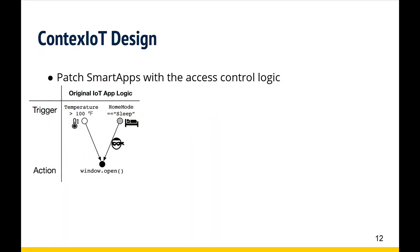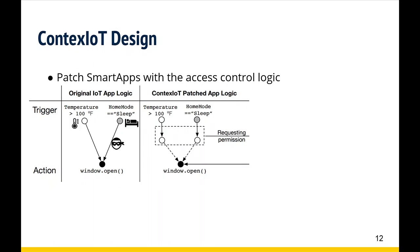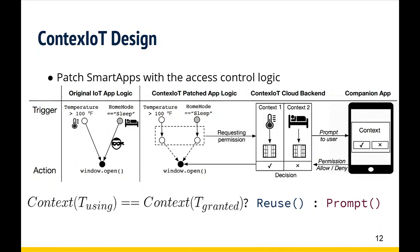Here is an example of how the patching mechanism works. The original IoT app contains a benign logic which opens a window when the temperature is higher than a certain degree, and a malicious logic which opens a window when home mode turns to sleep, indicating the user has gone to bed. The patching mechanism modifies the execution logic of the sensitive action asynchronously — it first issues a permission request together with the context to the backend, then resumes execution upon approval, during which other executions are not blocked. The backend permission server maintains the mapping between the user's decision and the context, and if a context is unseen, it prompts the user.